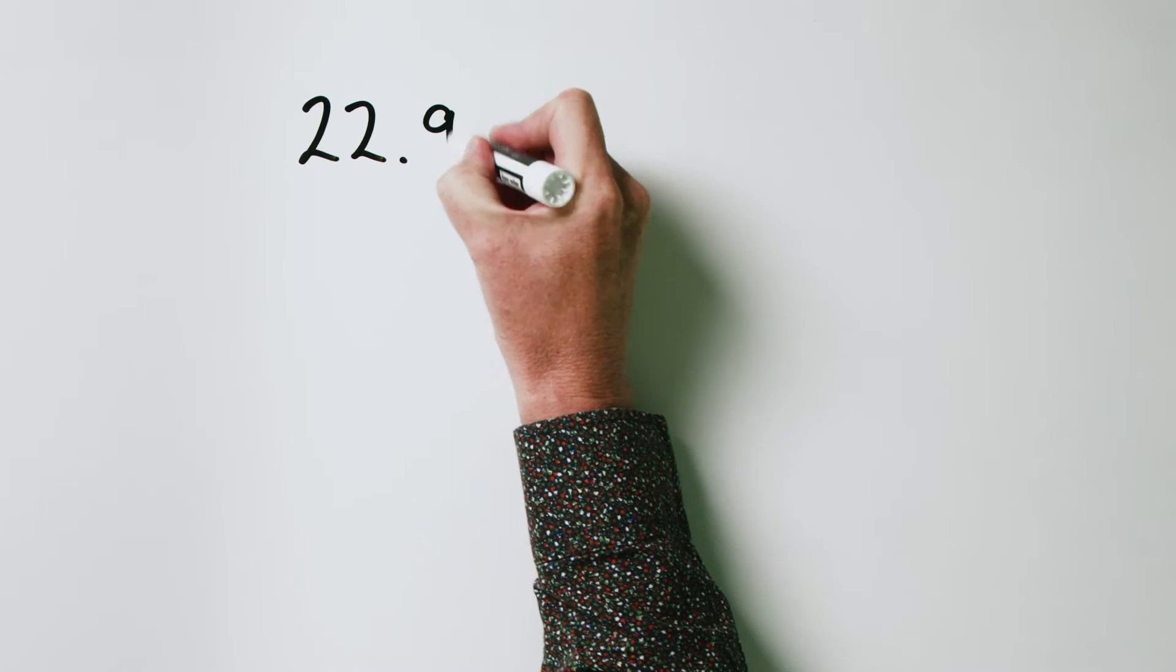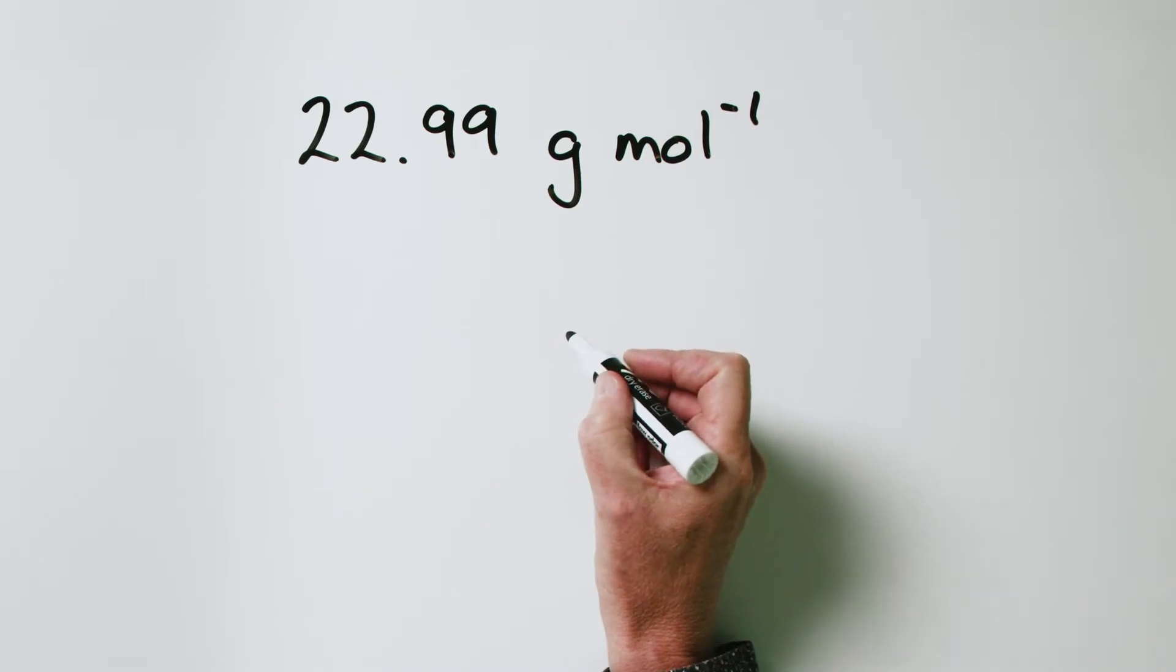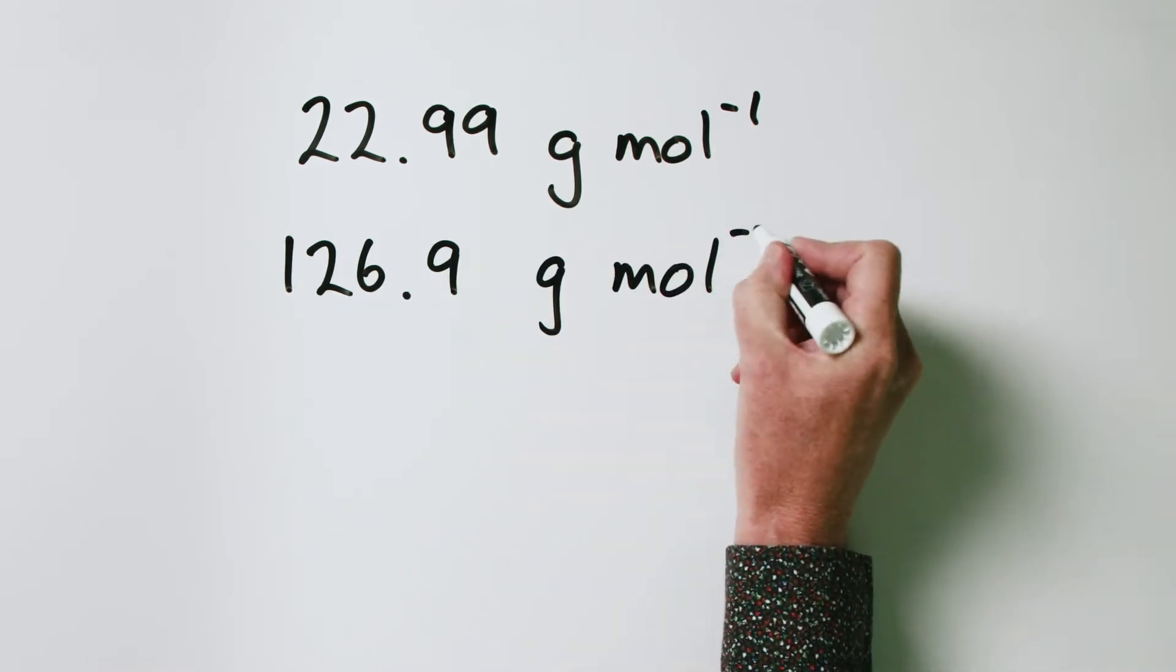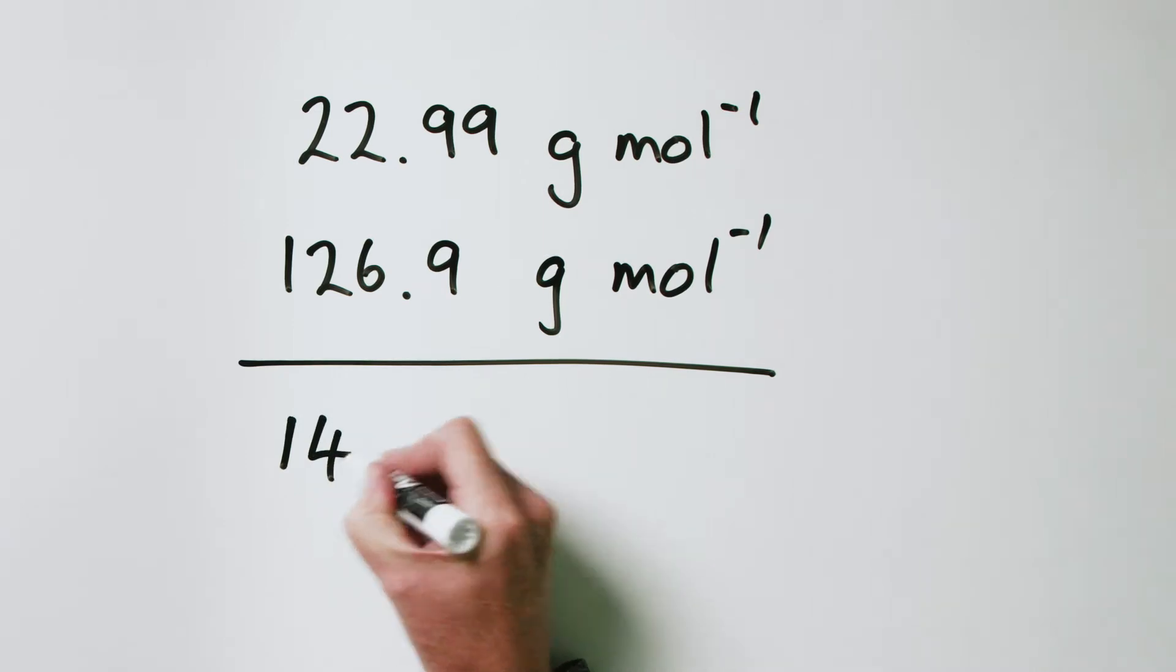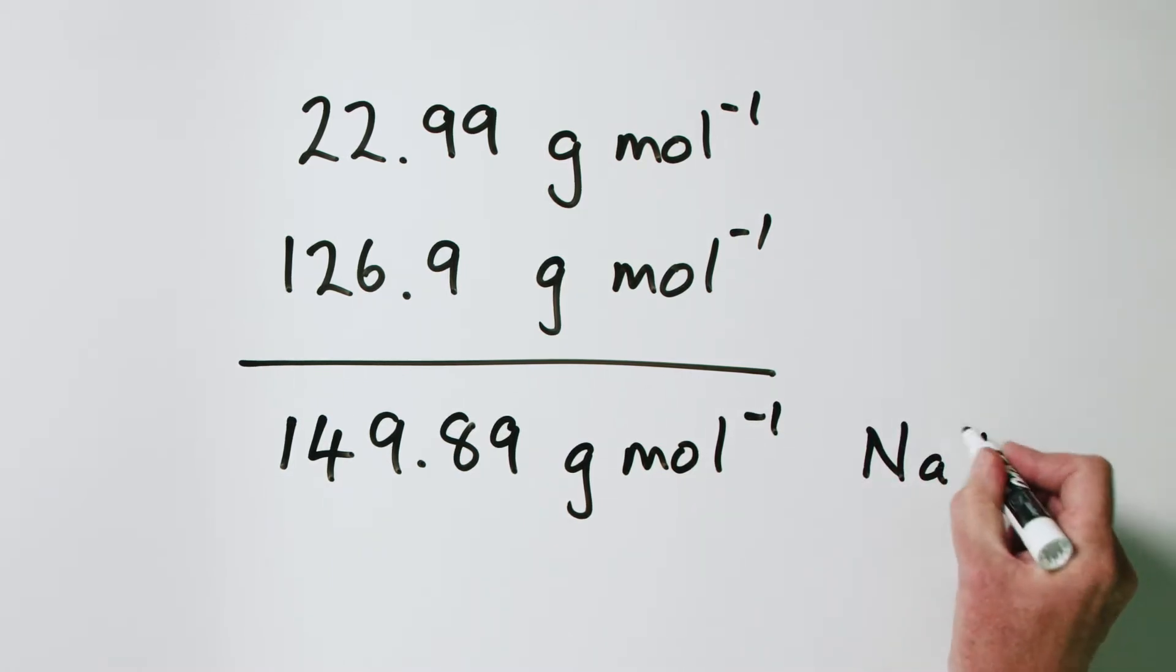Let's look at a little example. Let's calculate the molar mass of sodium iodide. We do that by going to our periodic table. The molar mass of sodium is 22.99 grams per mole, and the molar mass of iodine is 126.9 grams per mole. If we add these up, we get 149.89 grams per mole, the molar mass of sodium iodide.